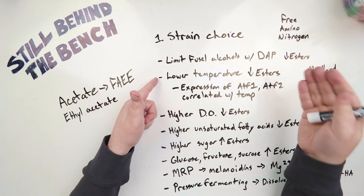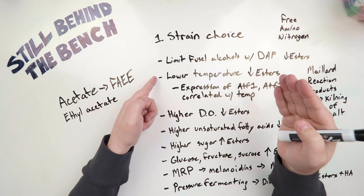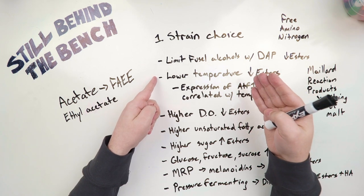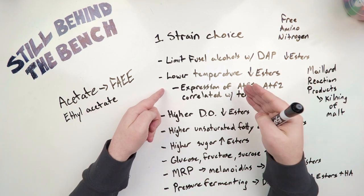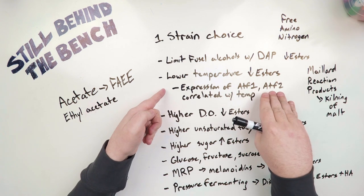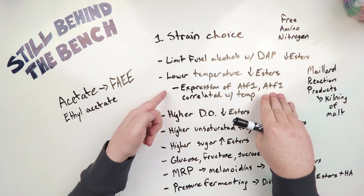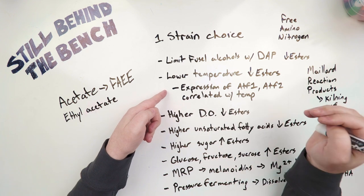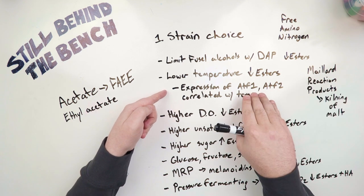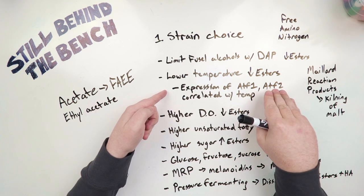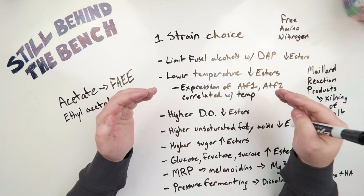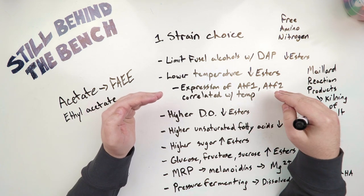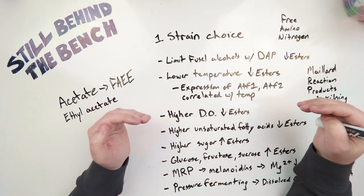Like isoamyl alcohol will mean less isoamyl acetate and less fusel alcohol-based esters. Next, lower temperature. So you lower the temperature, you're going to be lowering the amount of growth in general. But also, the expression or the production of the ATF1 and ATF2 enzymes is actually correlated with temperature. So if you have a higher temperature, more of these two enzymes are going to be produced. So if you lower the temperature, less of these enzymes will be produced and less esters will be produced.